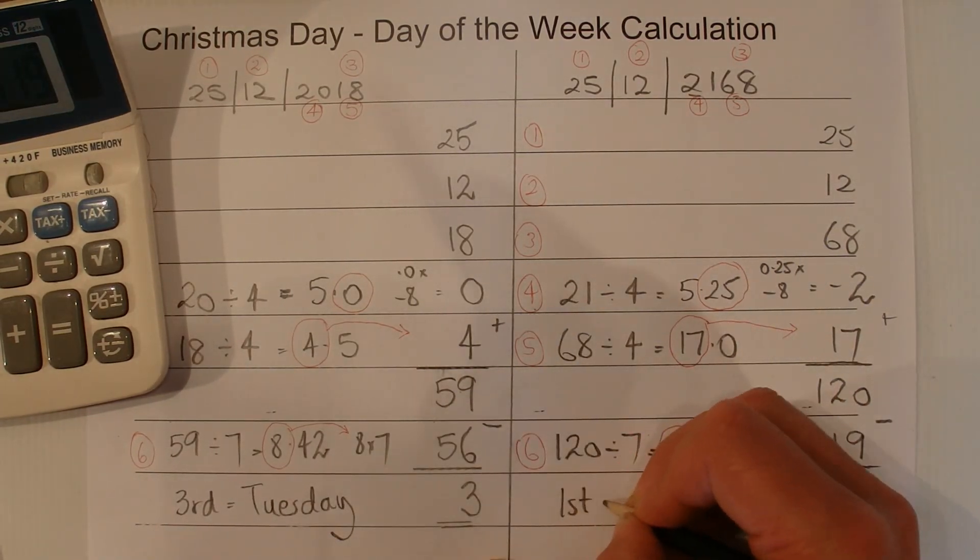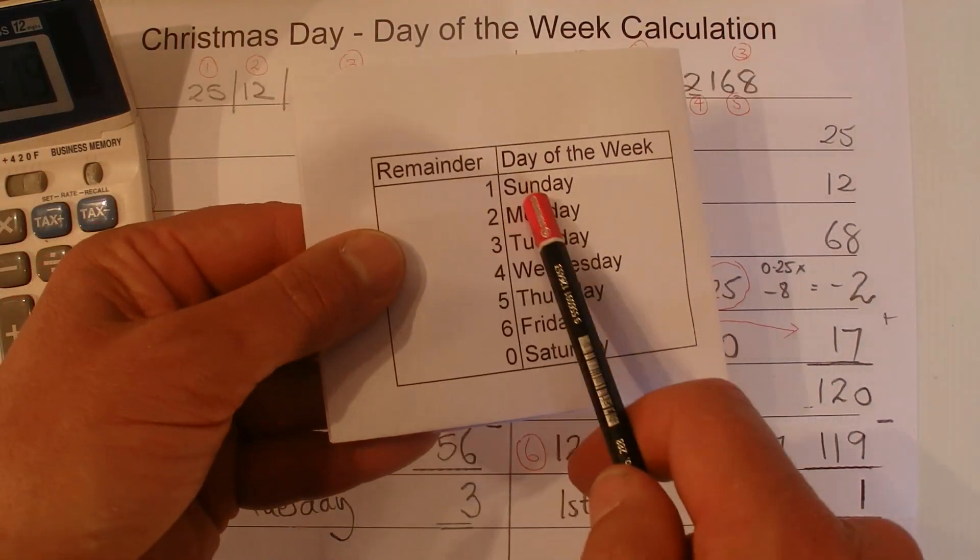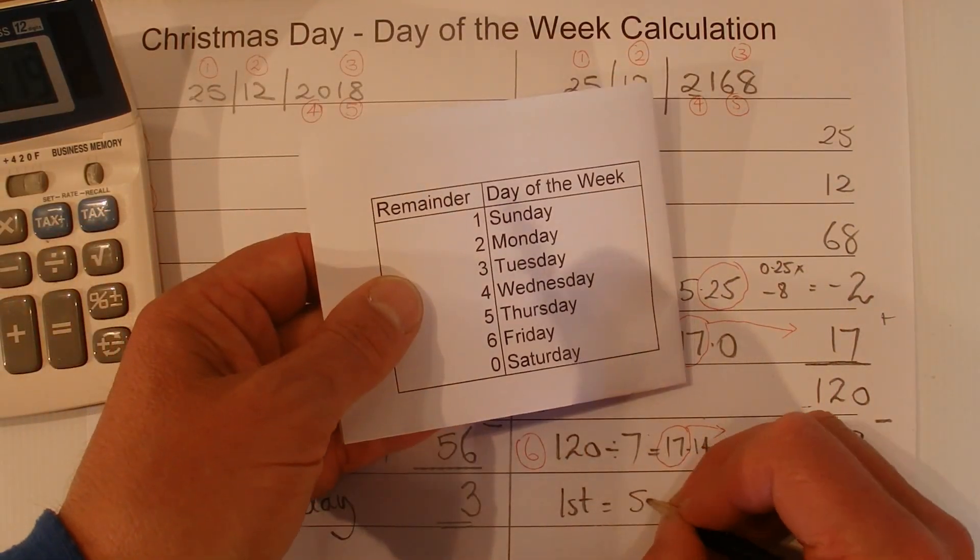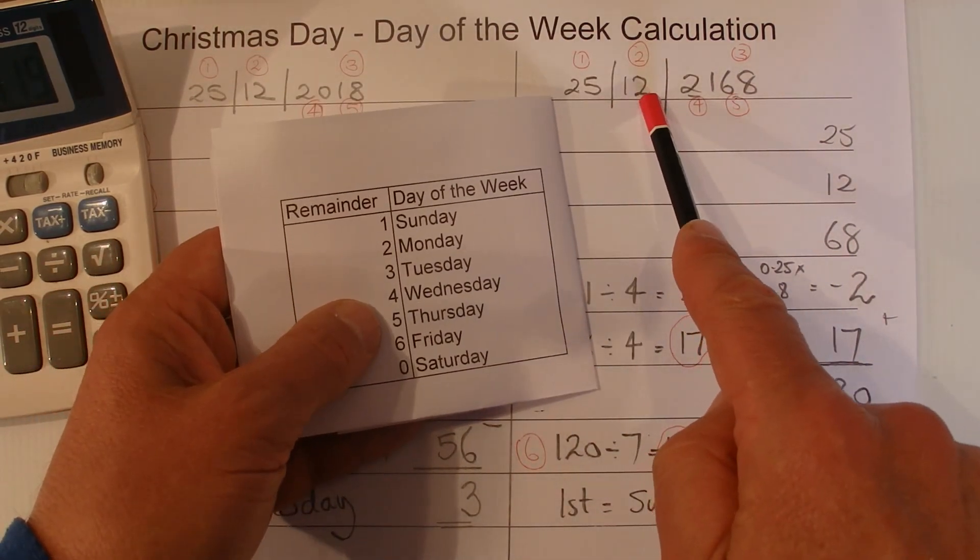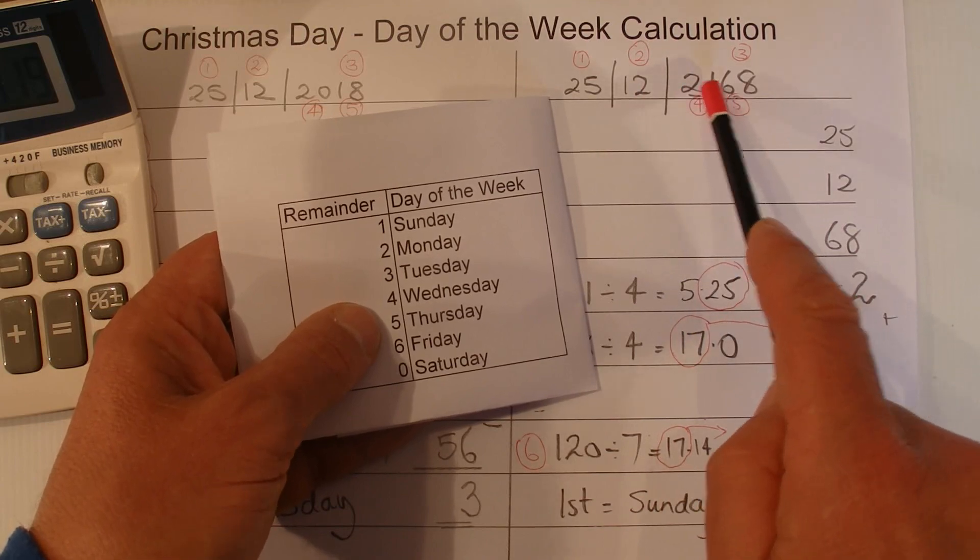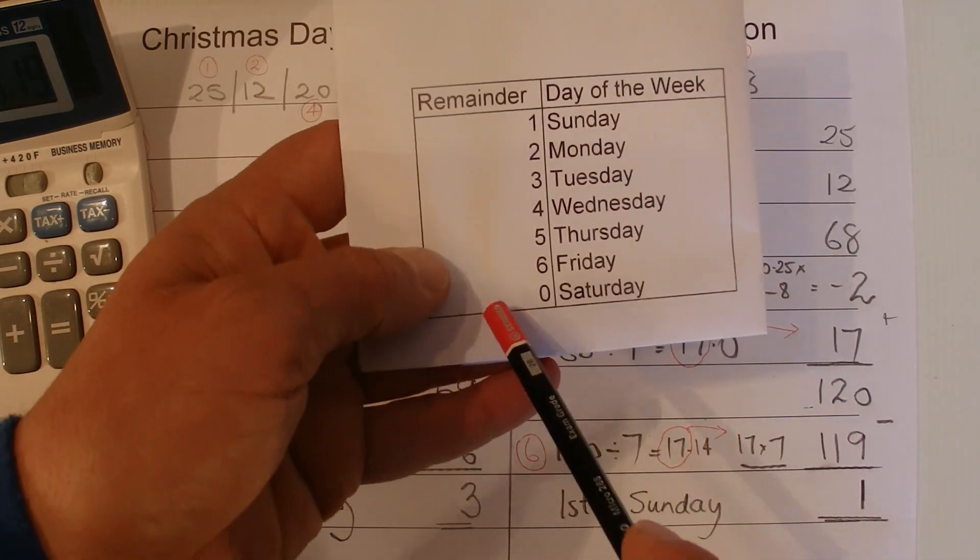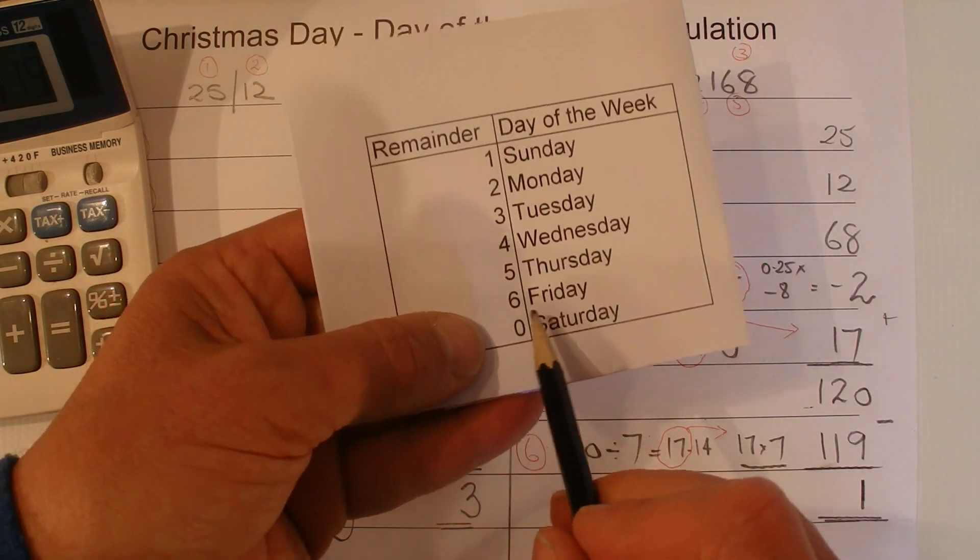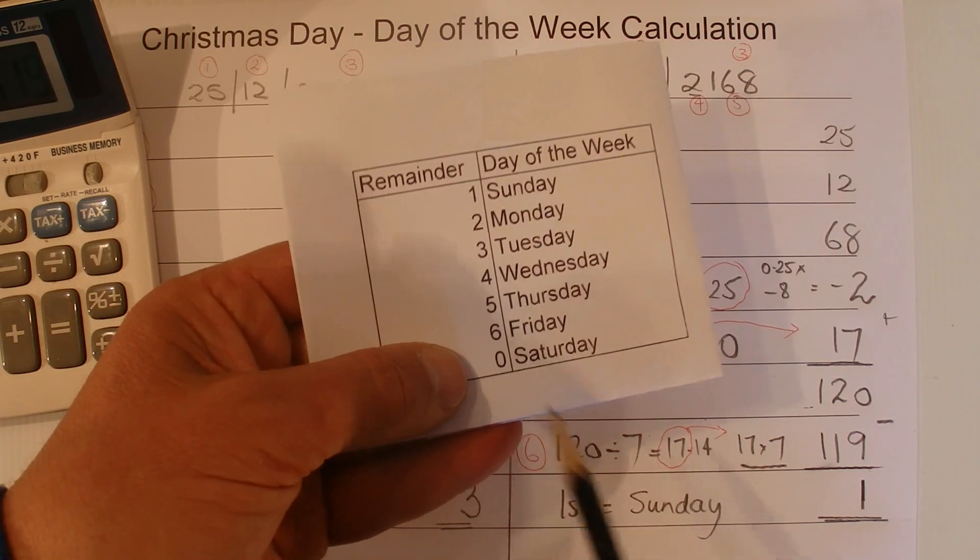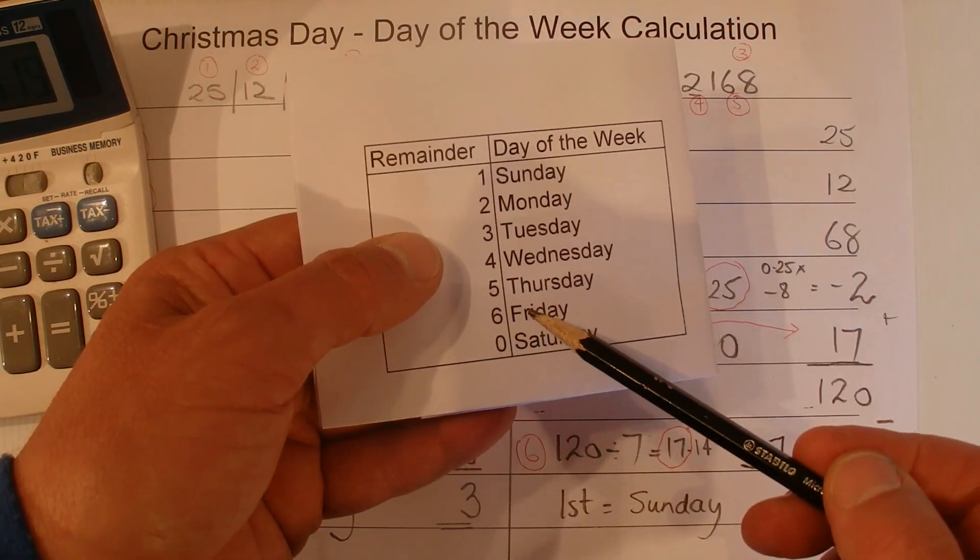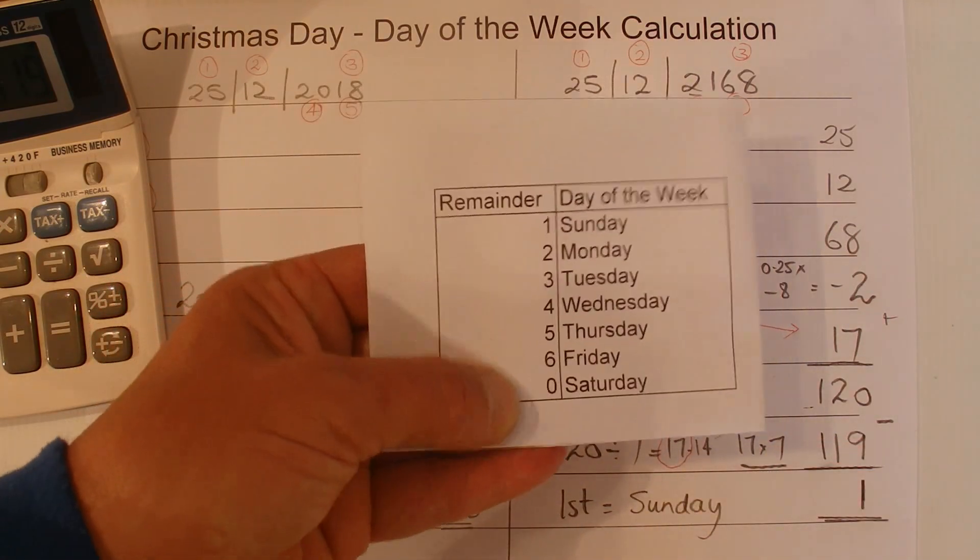So there we go, the first day of the week. We know from this trusty table that the first day of the week is always a Sunday. So there we go, the 25th of December 2168 will be a Sunday. And one thing to note, I guess, about the table is that if you come up with a remainder of 0, then that's going to be the Saturday. So 1 through to 6 is Sunday through Friday. And 0 is the Saturday.